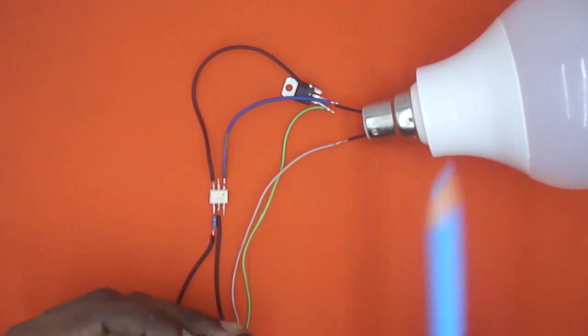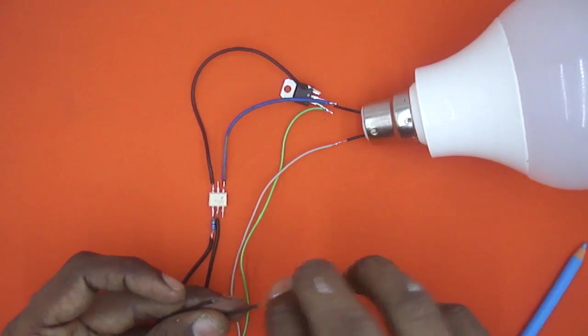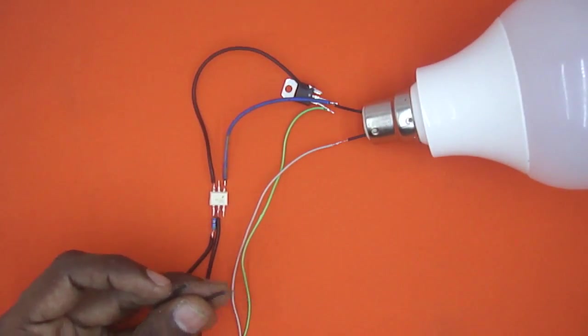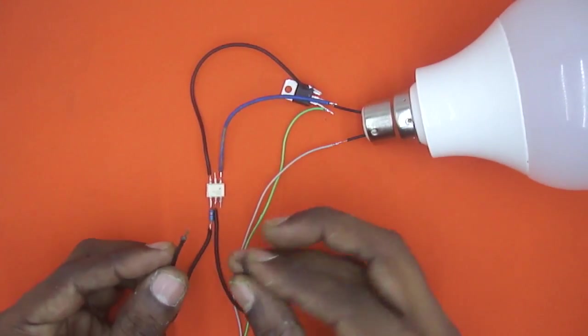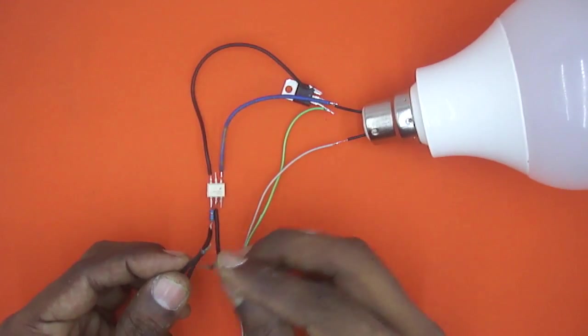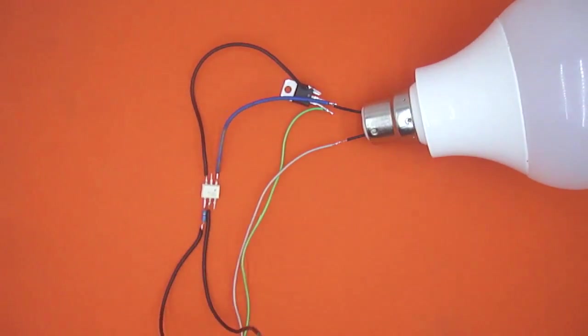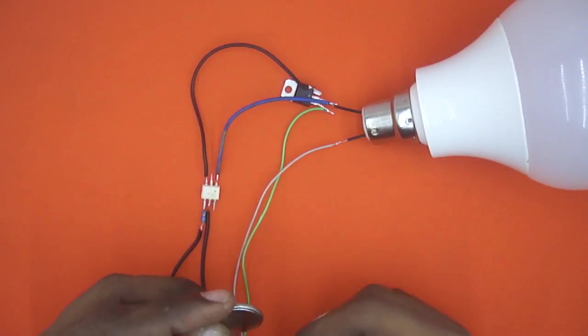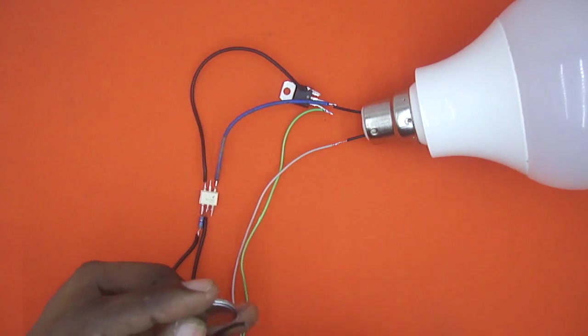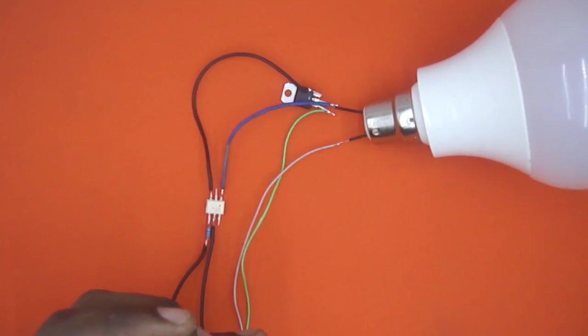So just to activate the opto isolator so that the triac will also get activated, we need to give a small power supply of 3 to 5 volts so that the LED will glow. Now I have a small battery, this is a button. You can use any battery which is giving a voltage of 3 to 5 volts.